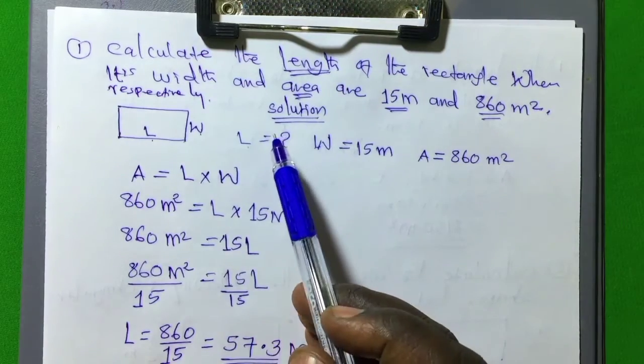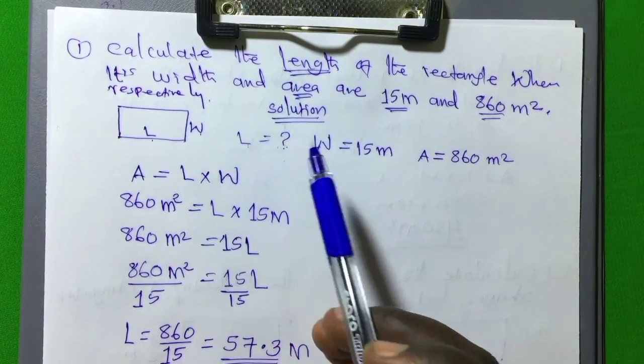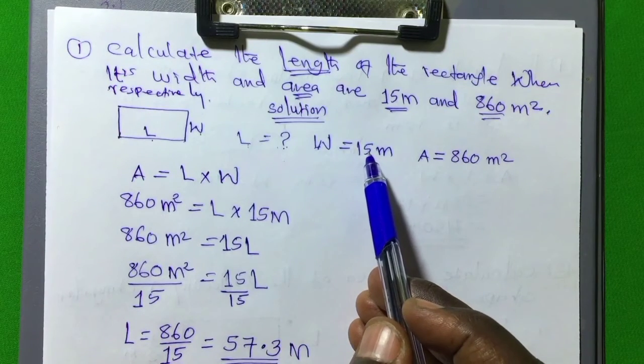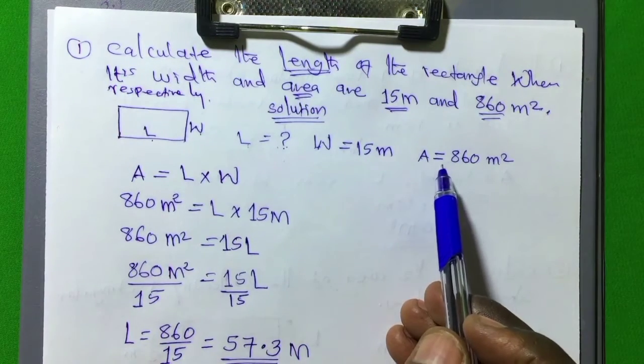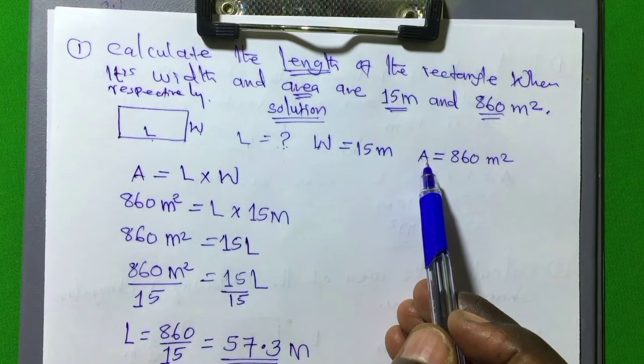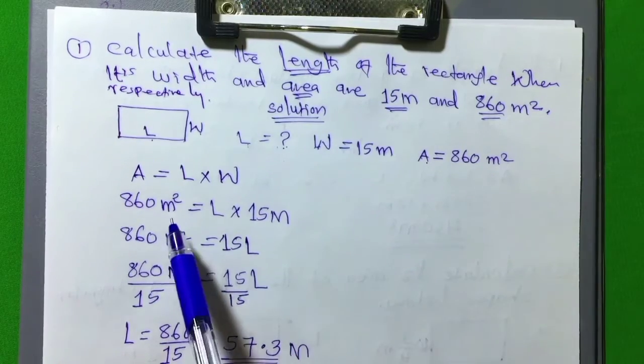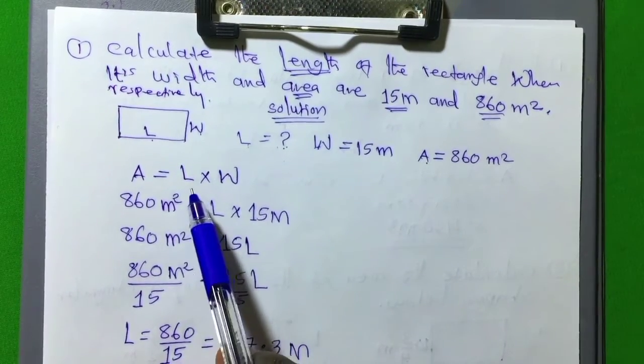Now L we don't have. Let's put a question mark. Then the value of W we are already given which is 15 meter and the value of A, which is the area of the rectangular shape as 860 meter square.